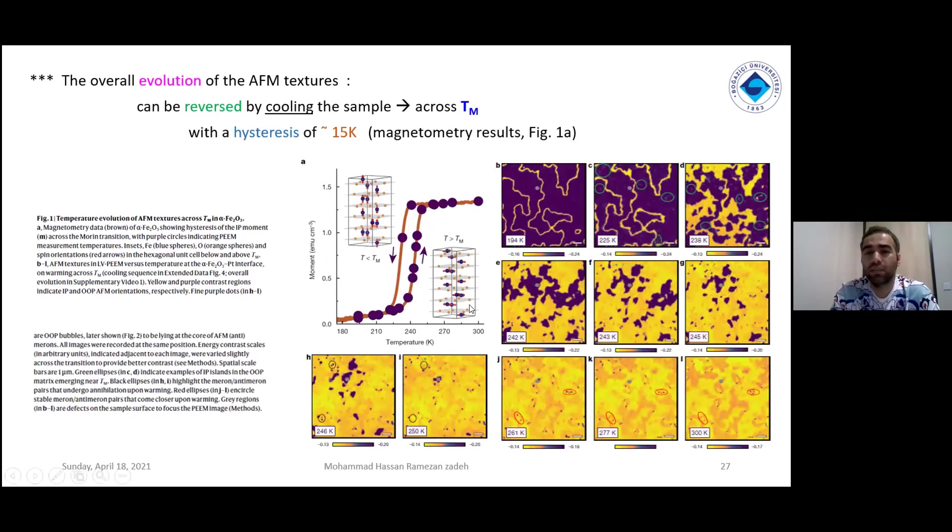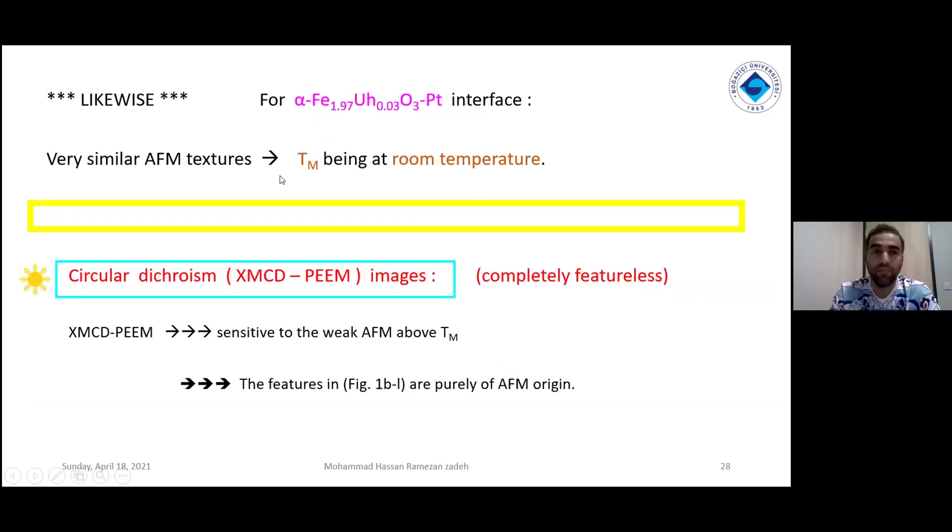In this picture, about figure A, you see a temperature-dependent magnetometry measurement happening across the TM or Morin temperature. The overall evolution of antiferromagnetic textures can be reversed. Reversion is very important by cooling the sample across the TM. Similarly, for the Pt-covered or layered hematite thin film will also be in the interface. What we see here is somehow similar to the previous pictures.